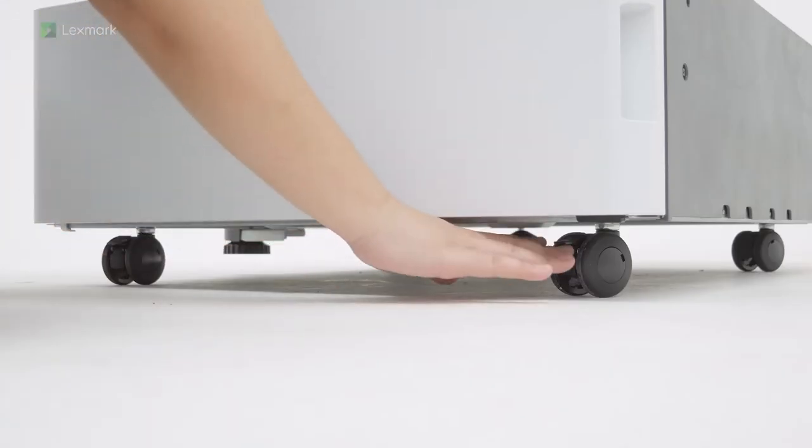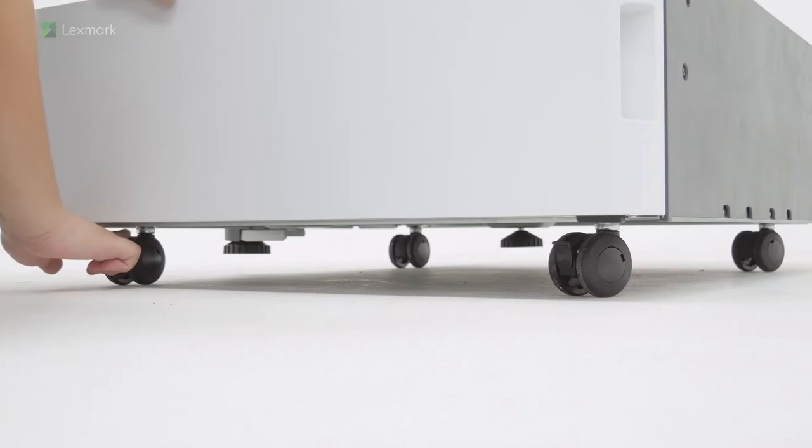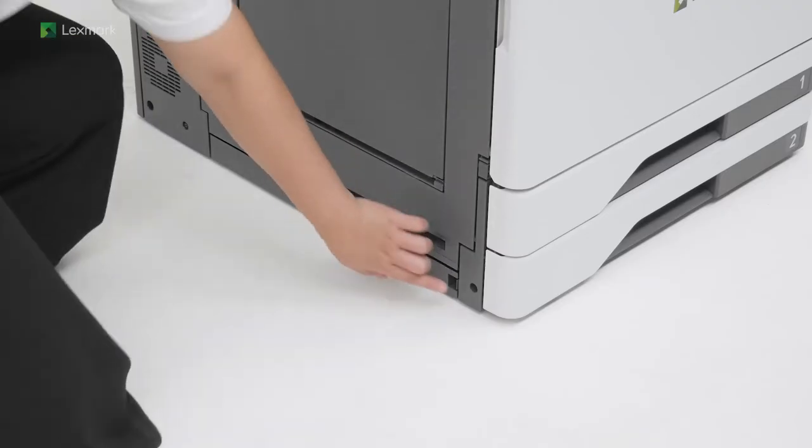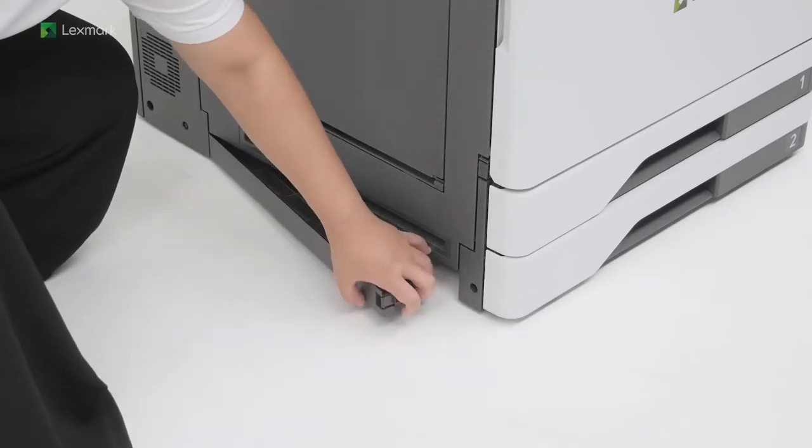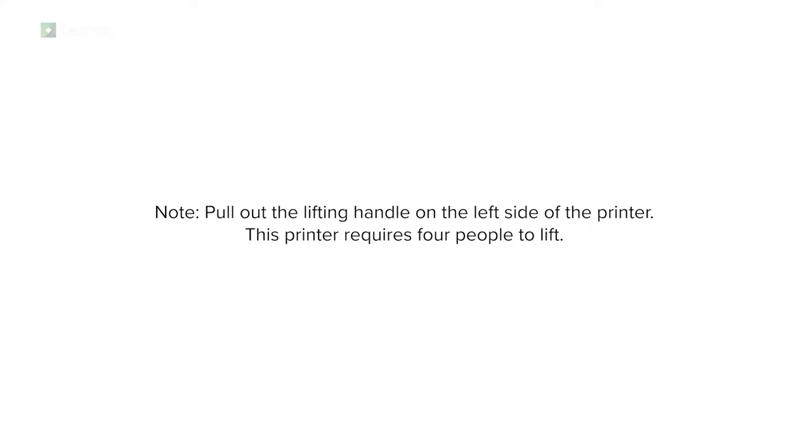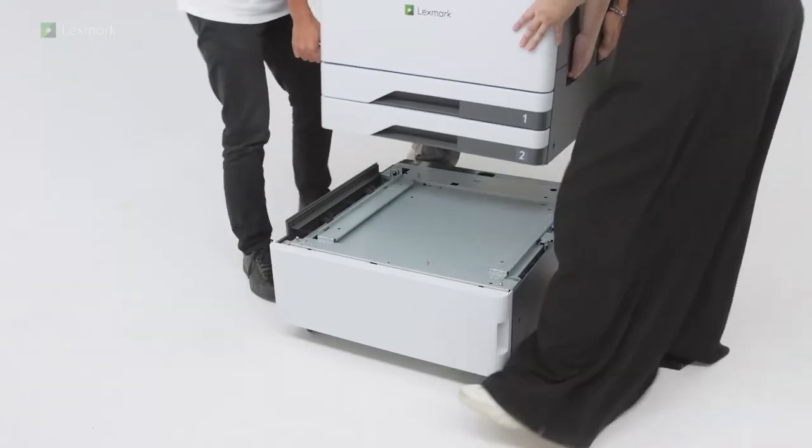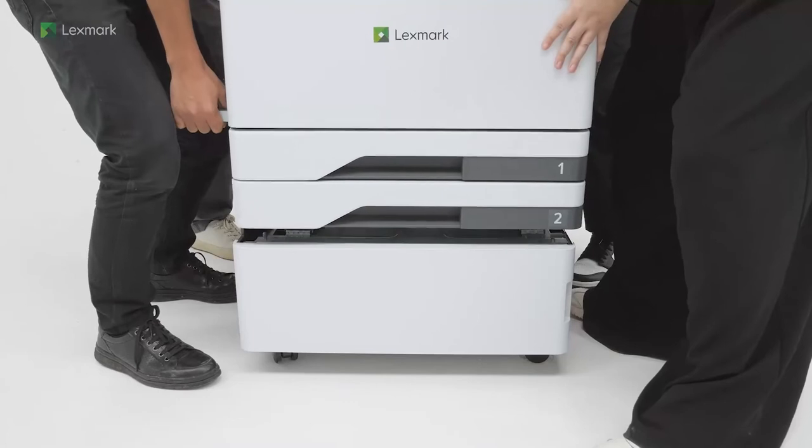Lock the casters to keep the cabinet from moving. Remove the option installation cover at the left side of the printer. Pull out the lifting handle on the left side of the printer. Note: This printer requires 4 people to lift. Align the printer with the cabinet and then lower the printer into place.